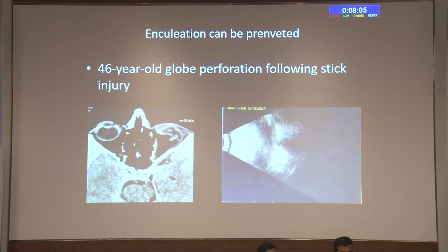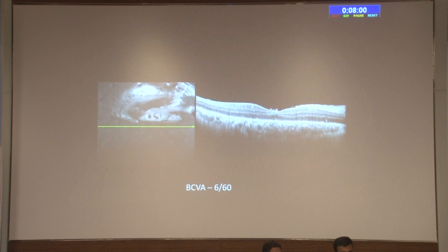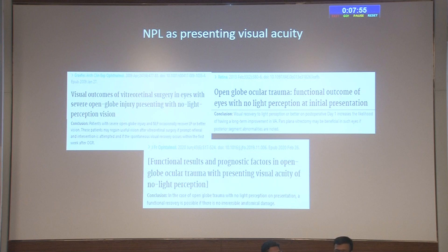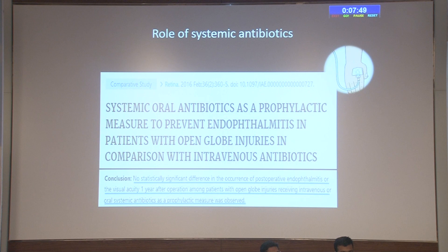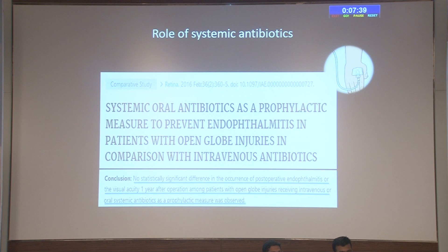Imaging is very important; X-ray is the first key modality. Prophylactic antibiotics have a role, though somewhat controversial — they are still routinely given. No perception of light (no PL) is not a contraindication for surgery in open globe injury, as many patients with no PL have achieved good vision after surgery. Intravitreal antibiotics such as vancomycin and sometimes voriconazole should be given at the end of every surgical procedure.